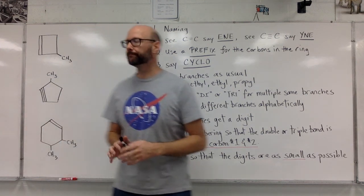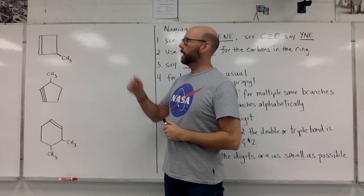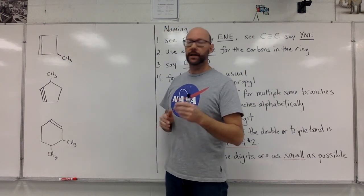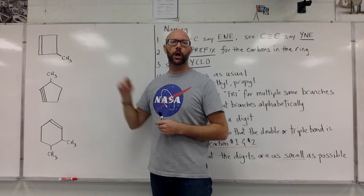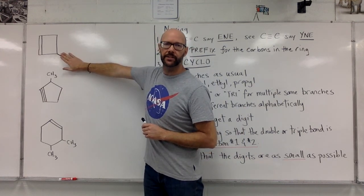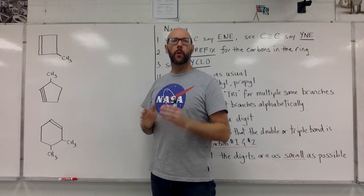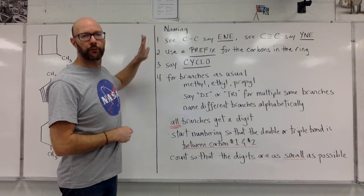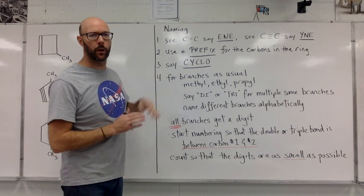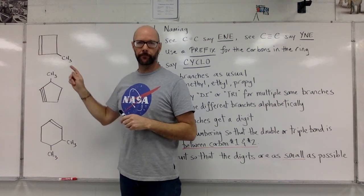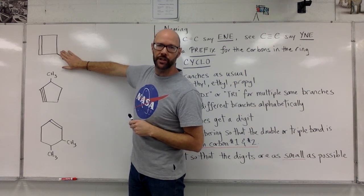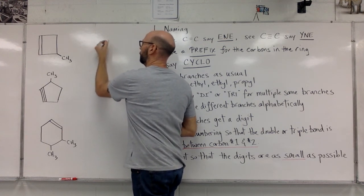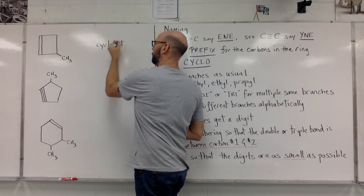Here are a few examples. We have a four-carbon ring — it's a square — and there's a double bond, plus a one-carbon branch on the outside. Let's leave the branch aside for a second. It's a four-carbon ring with a double bond, so it's going to end with '-ene.' We're going to use the prefix for four, which is 'bute,' and we're going to have 'cyclo' because the structure makes a ring.